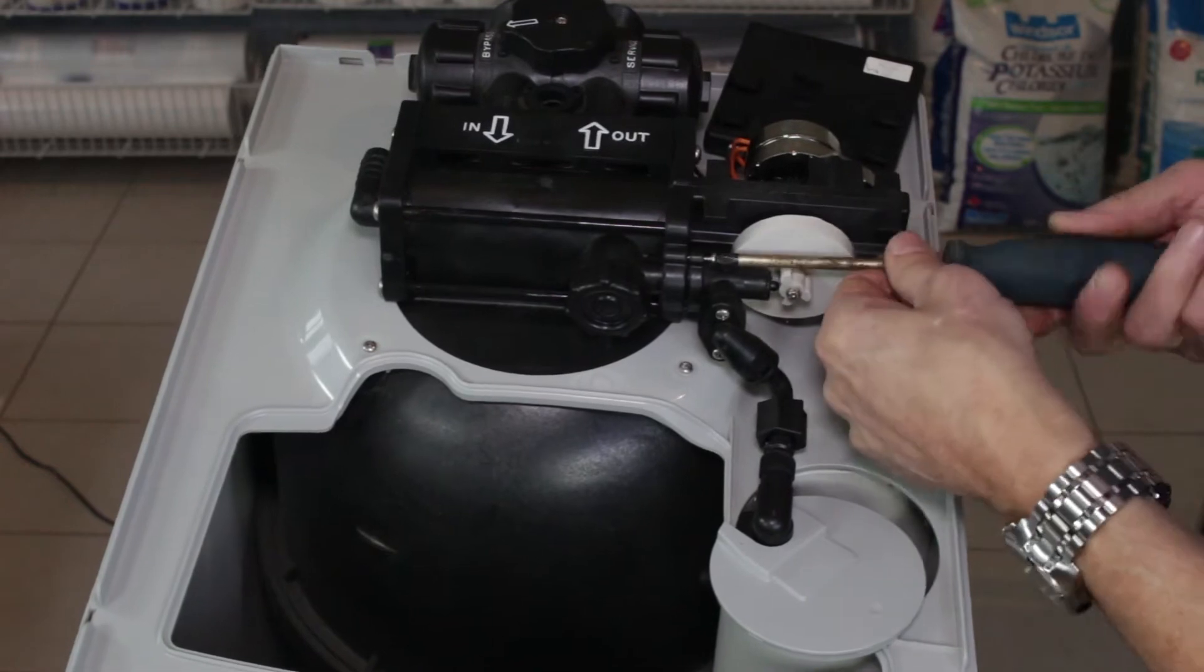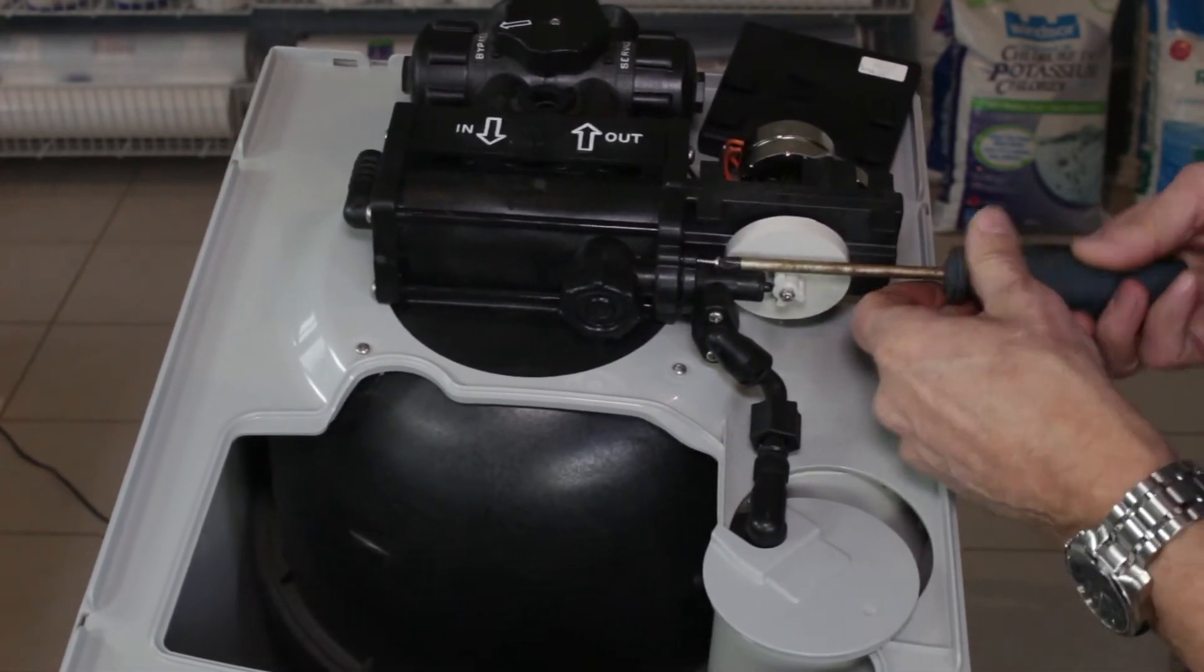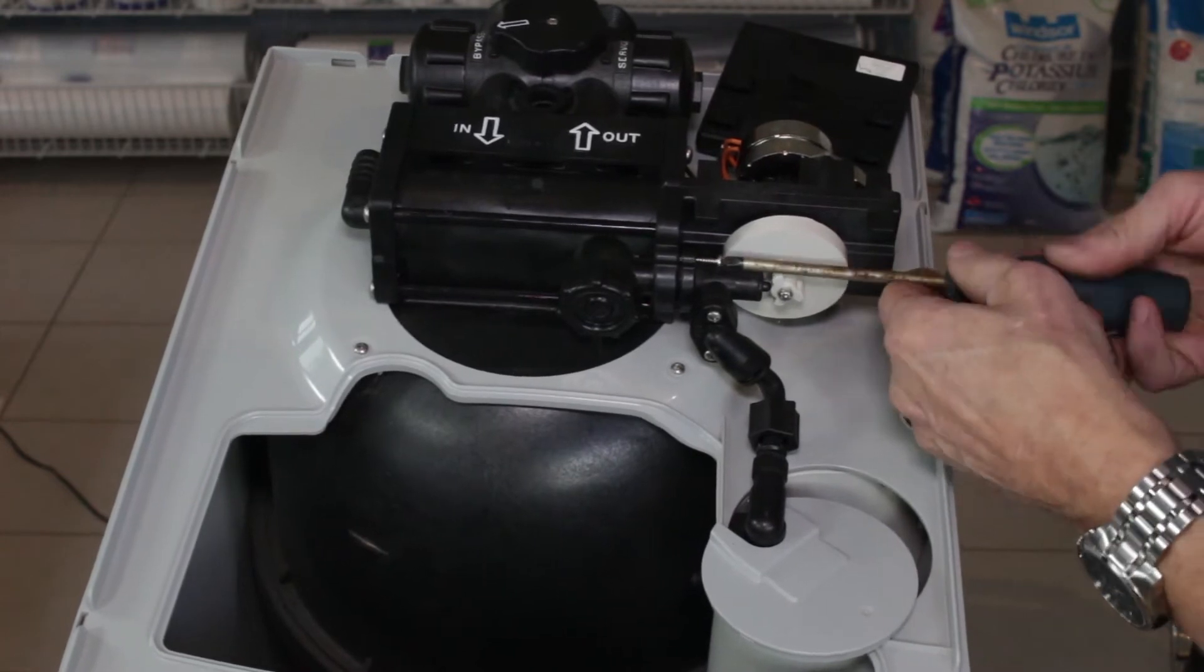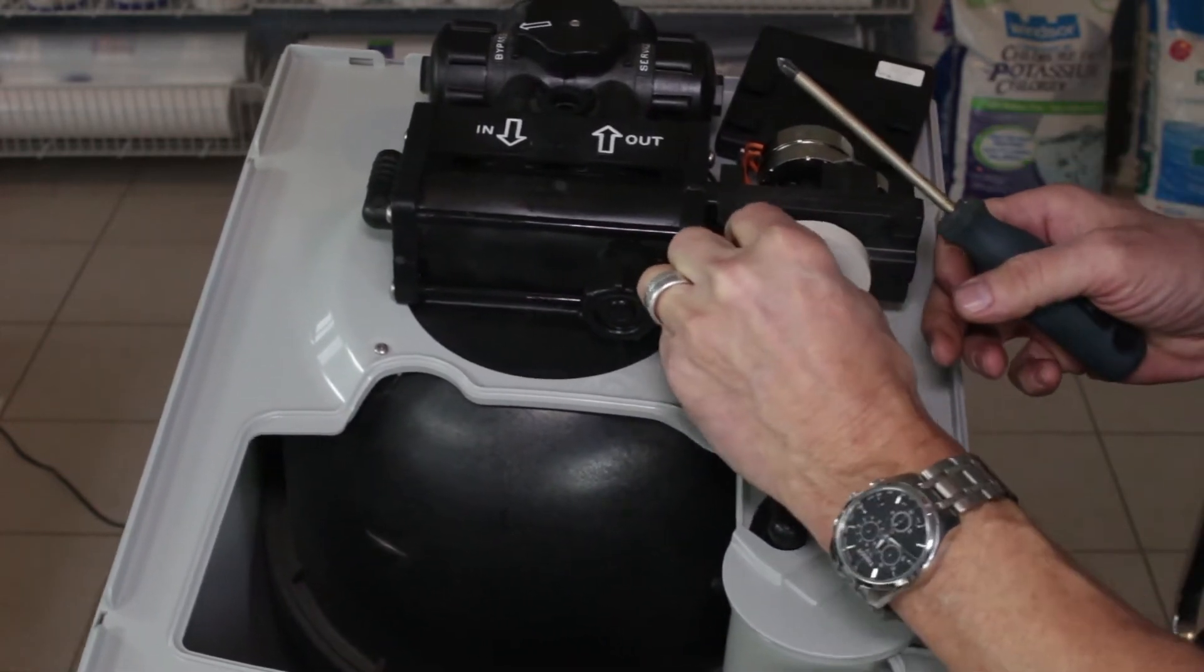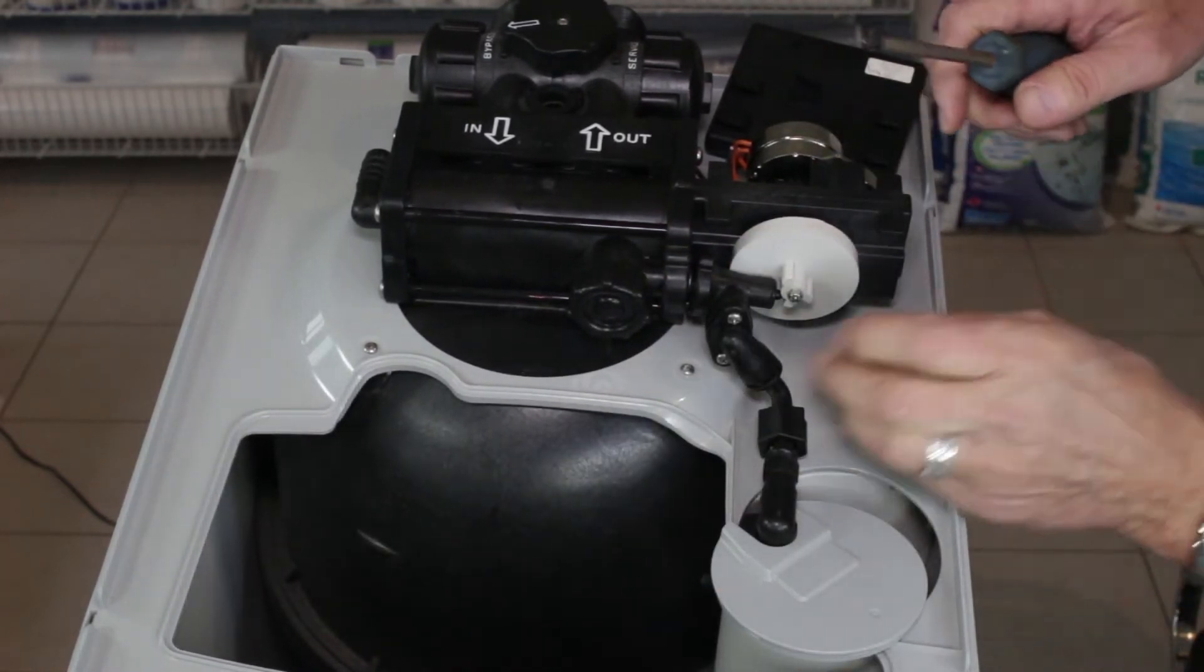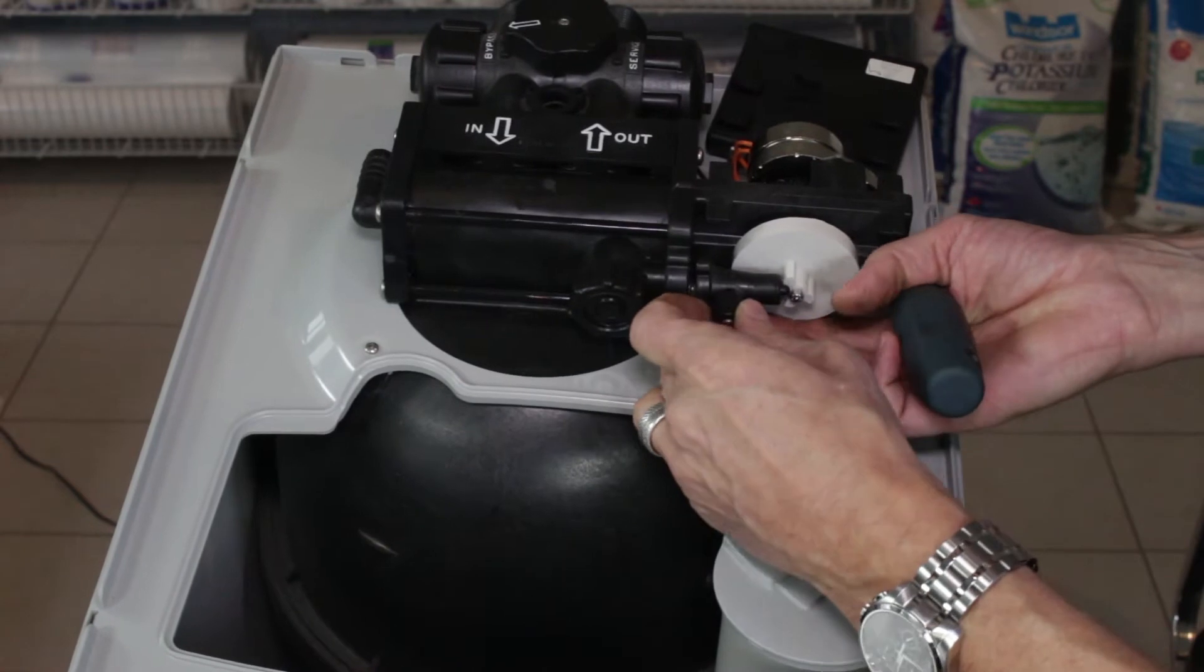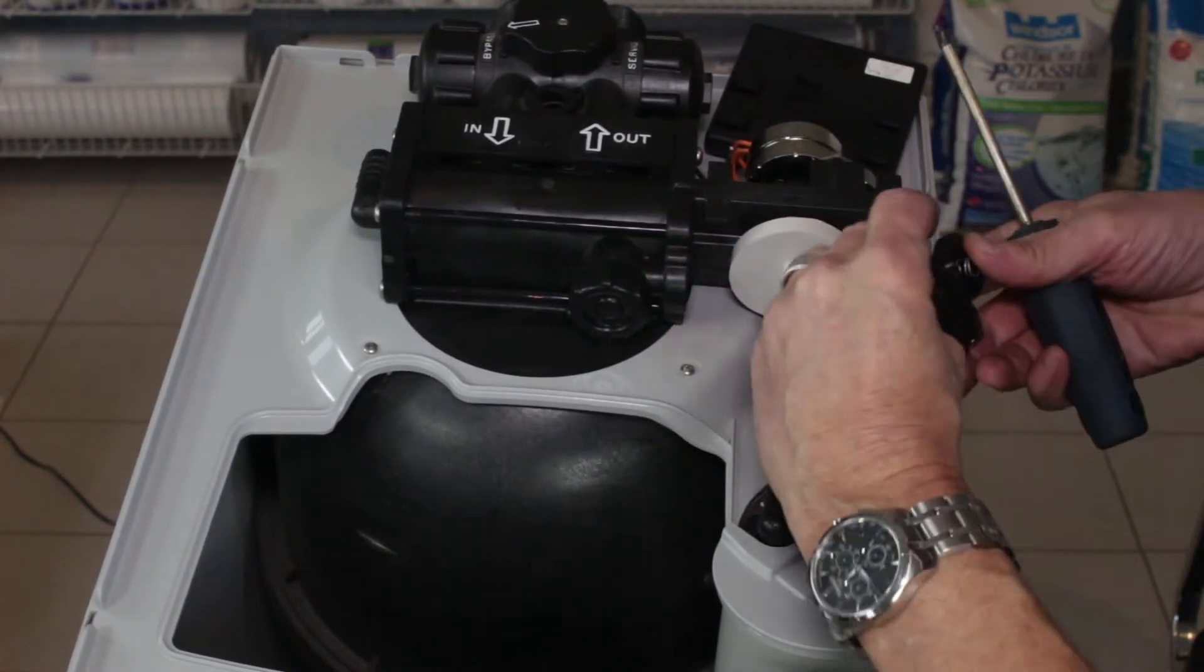Okay, so this water softener is on a chair, so that's why it's wobbling a little bit, but yours at home won't wobble nearly as much. You just have to be careful with the screws here that they don't fall inside the brine tank and then you'll have to go fishing them out.